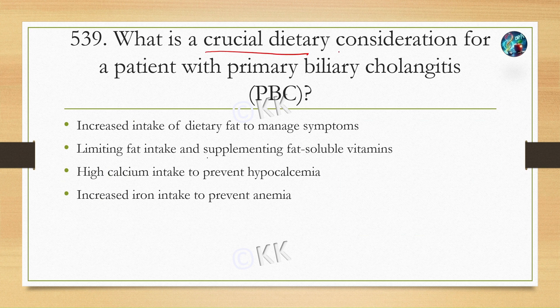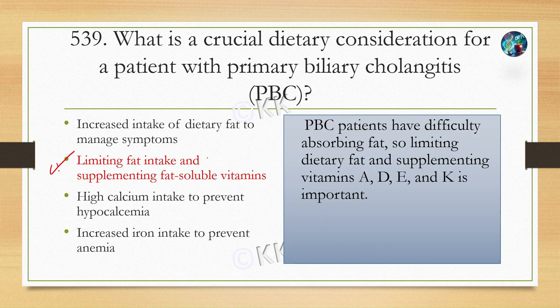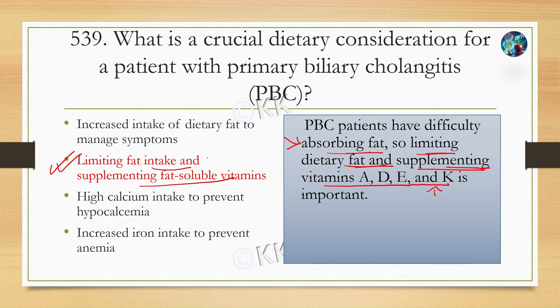What is the crucial dietary consideration for a patient with primary biliary cholangitis? Option A: increase intake of dietary fat to manage symptoms, Option B: limiting fat intake and supplementing fat-soluble vitamins, Option C: high calcium intake to prevent hypocalcemia, Option D: increase iron intake to prevent anemia. The correct answer is Option B: limiting fat intake and supplementing fat-soluble vitamins. PBC patients have difficulty absorbing fat, so limiting dietary fat and supplementing vitamins A, D, E, and K is important.